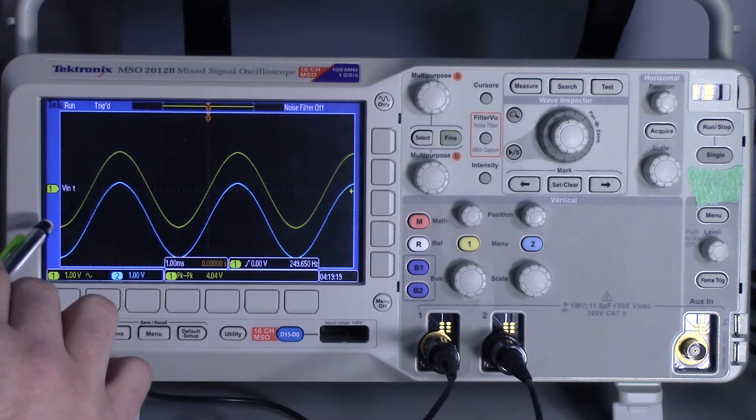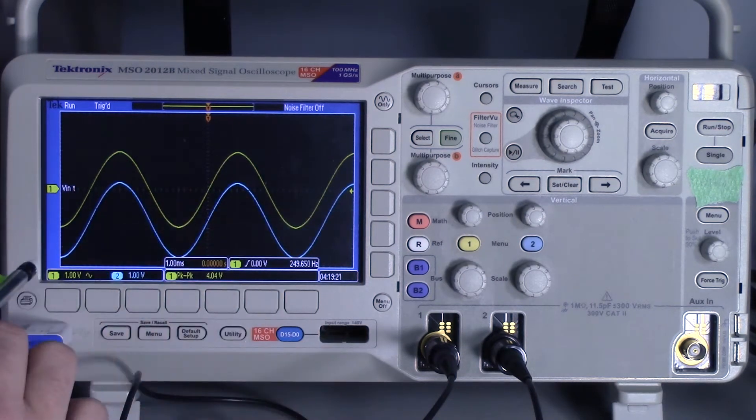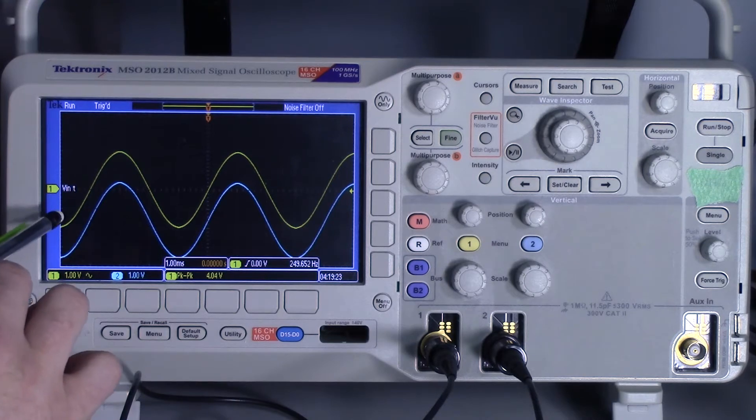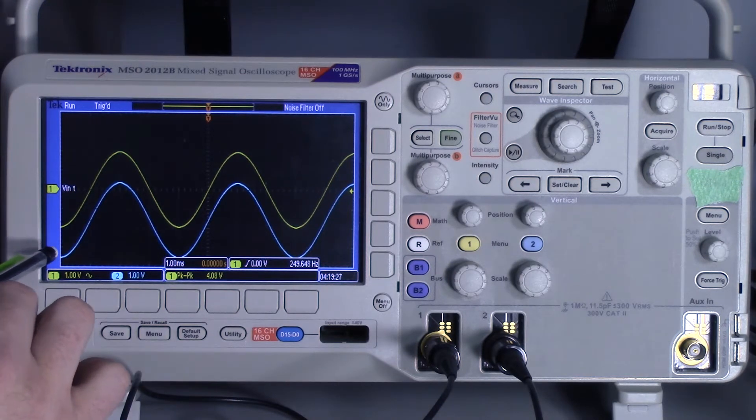All right, on the oscilloscope I'm measuring two identical AC waves. This is coming off of the function generator and then this is the output of a clamping circuit.